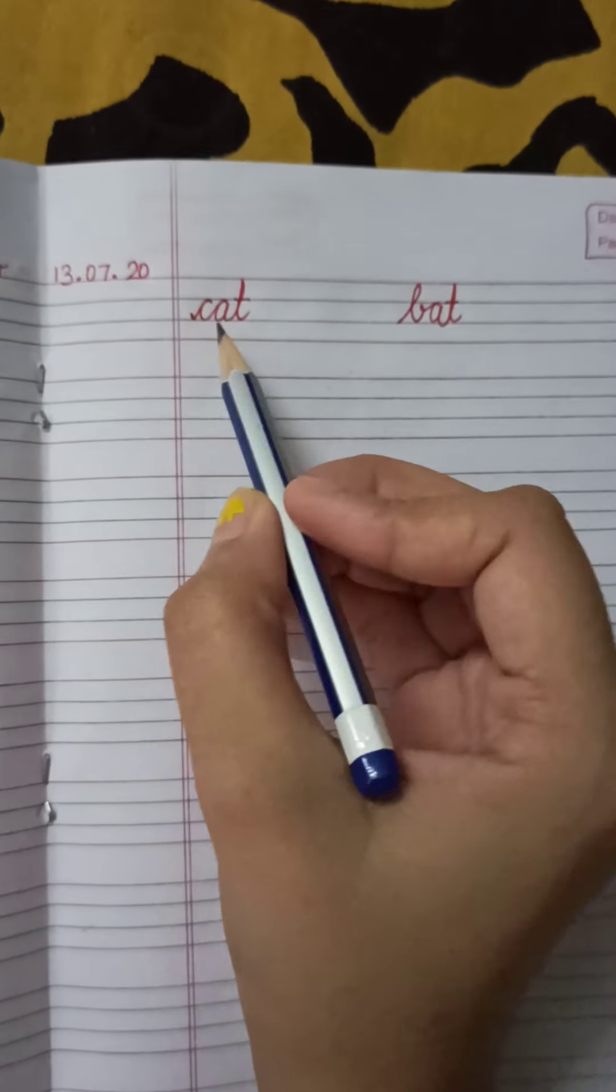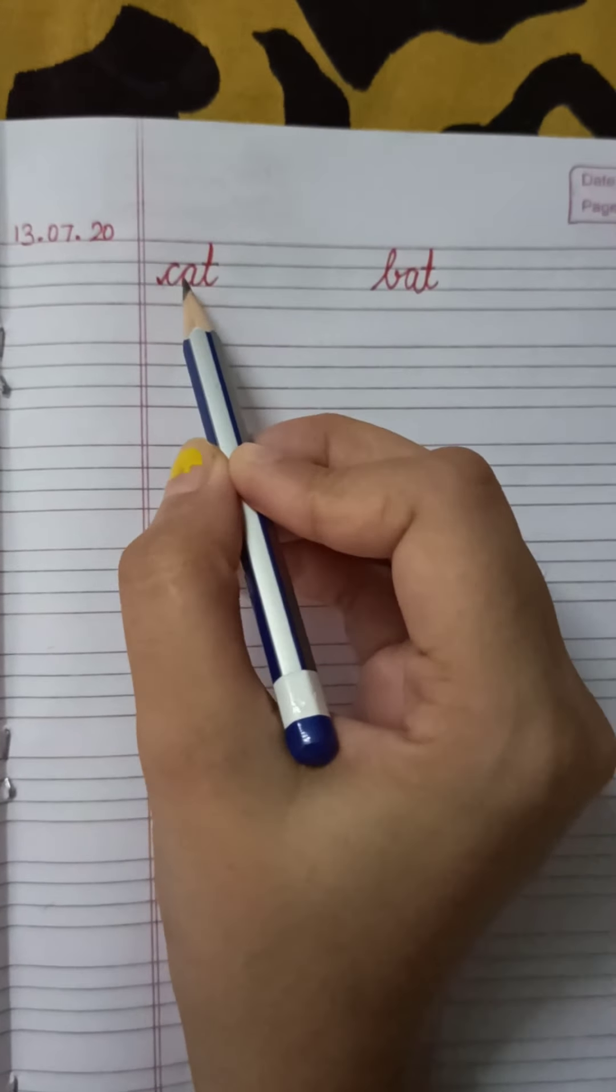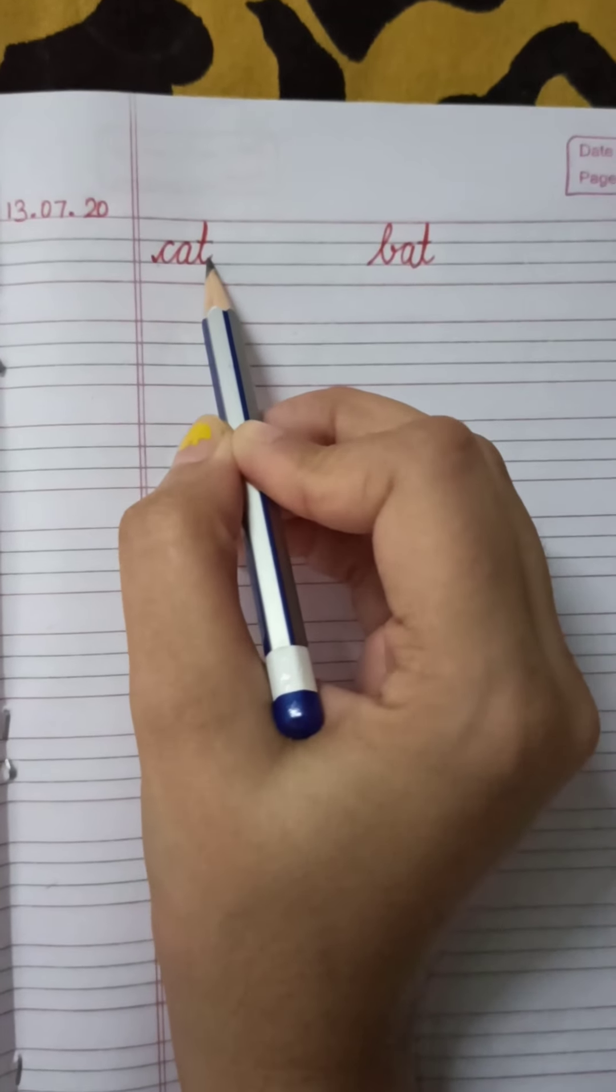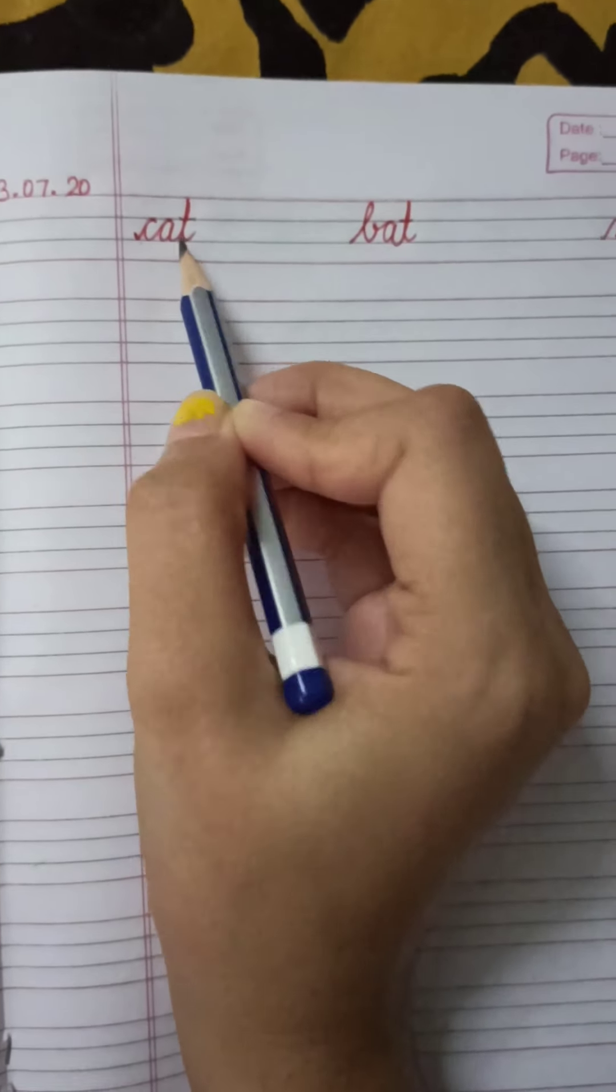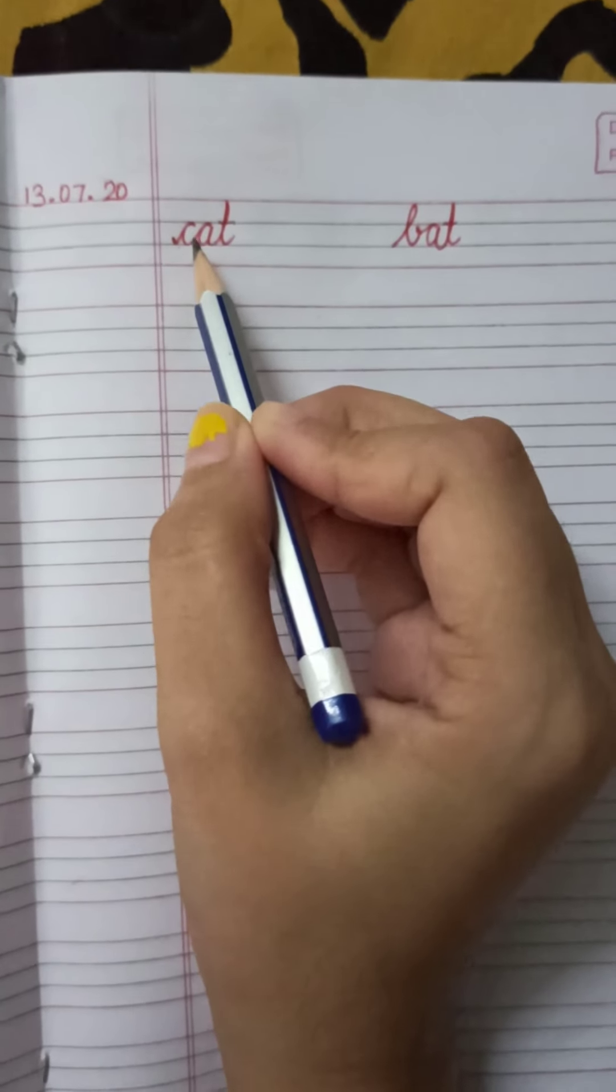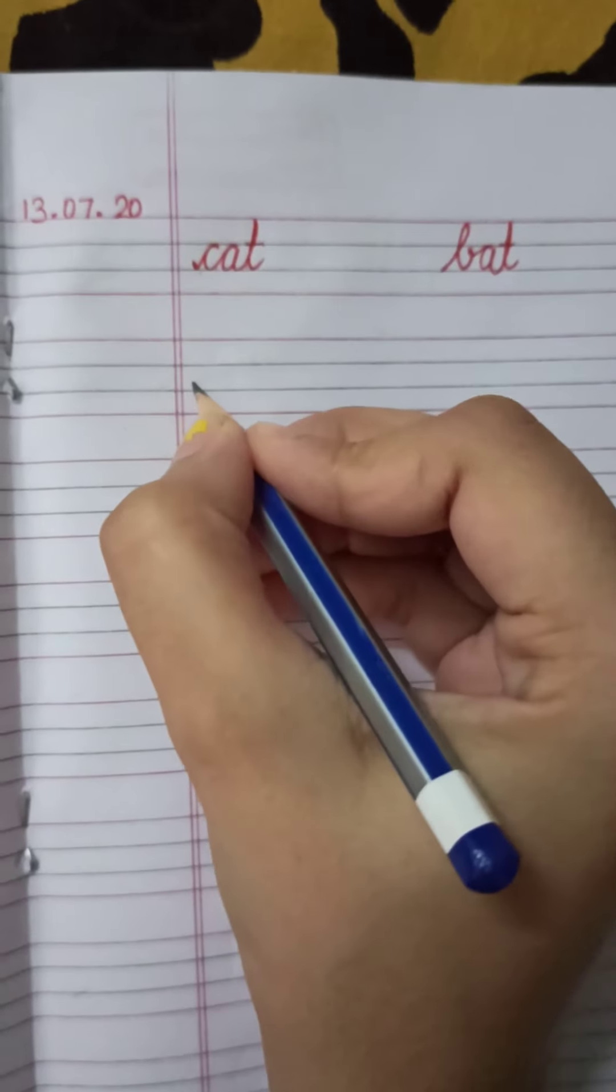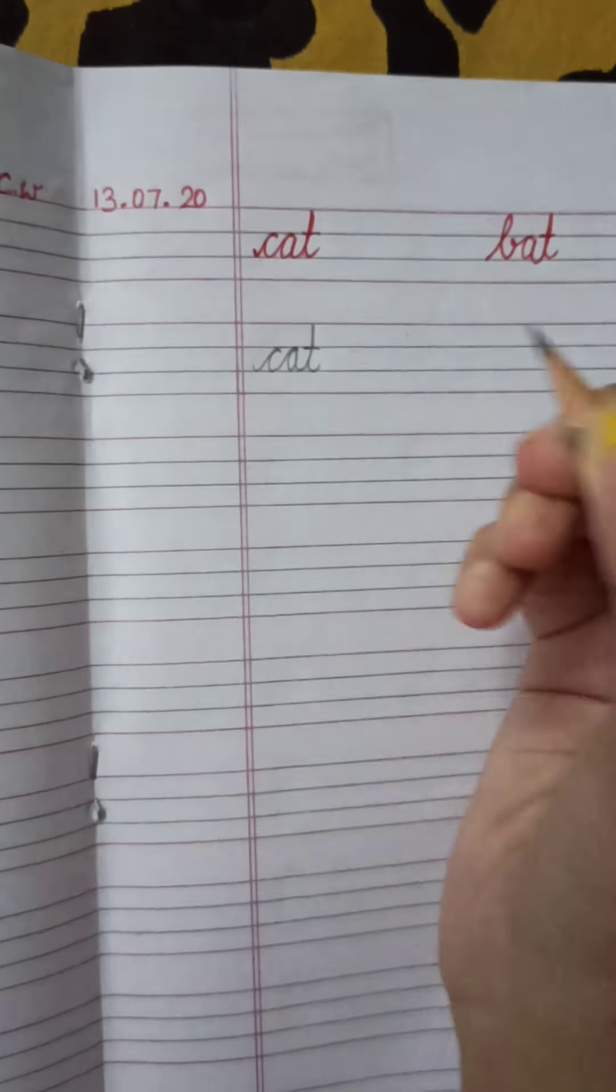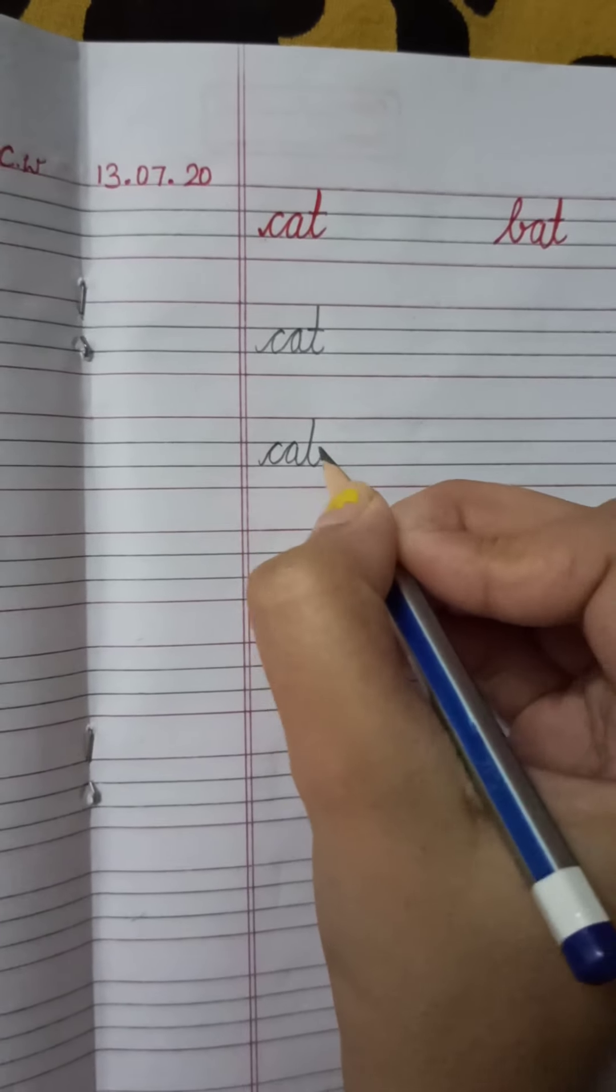What is this? C-A-T. What is this? Three letters. C-A-T. We have joined it. So what is this? C-A-T-Cat. What is this? A sound. C-A-T-Cat. C-A-T-Cat.